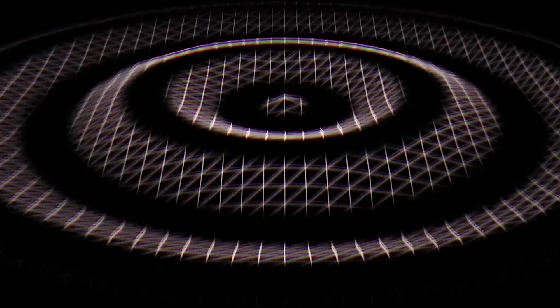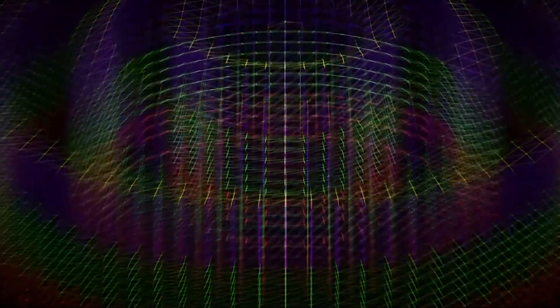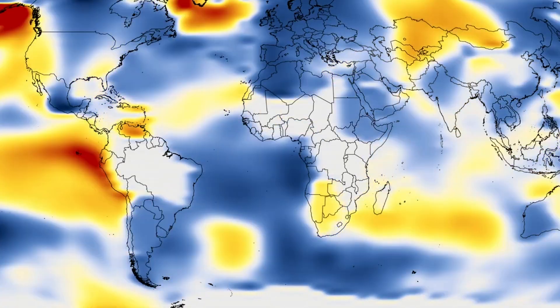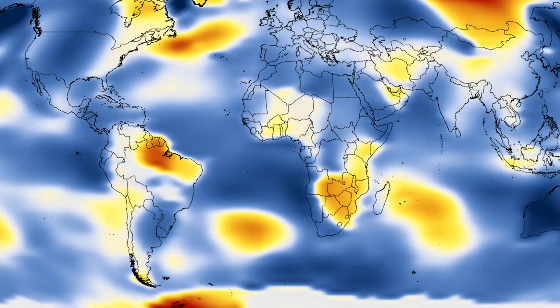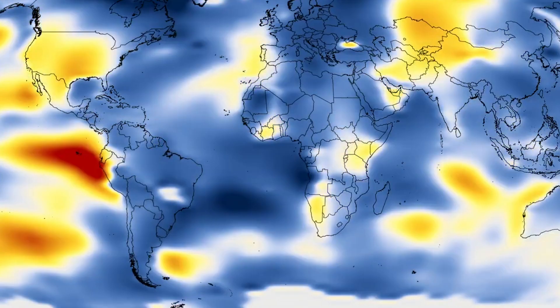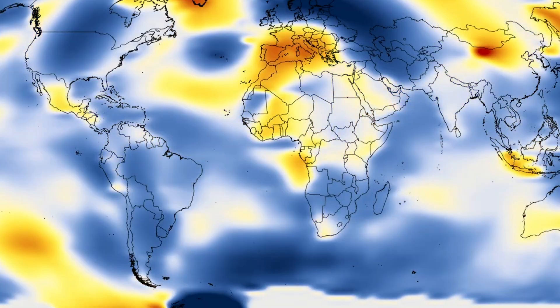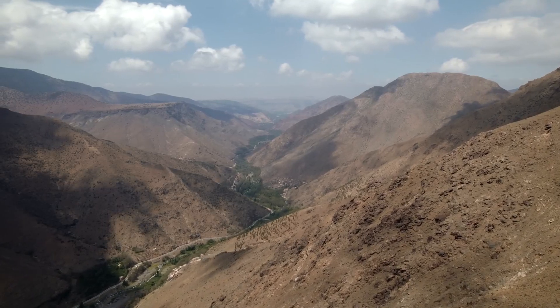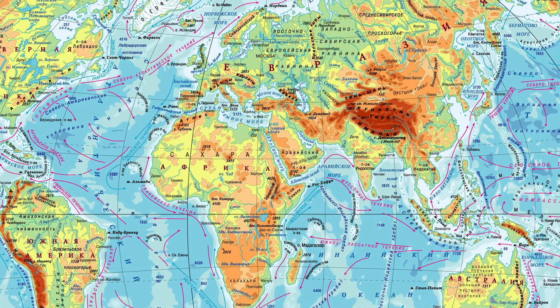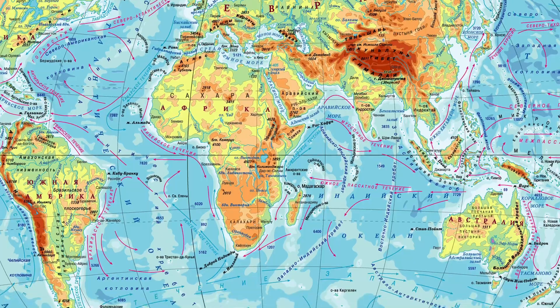Without delving into mathematical subtleties, any field is a kind of map of the distribution of some quantity's values in space. For example, the air near Earth's surface has different temperatures at various points around the globe, and we can draw a temperature field indicating its value at each point. We can also define a field of the heights of the Earth's surface above sea level. This field we call a physical map of the world.